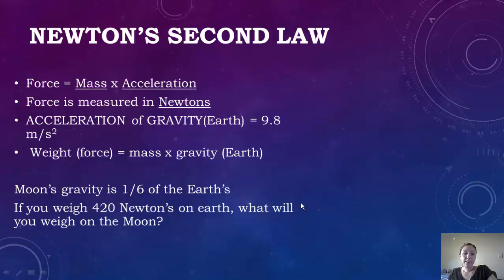So let's look at this quick question. A moon's gravity is one-sixth of the Earth. If you weigh 420 newtons on Earth, what will you weigh on the moon? If you said 70 newtons, you're correct. So basically you would just take 420 and divide it by 6 and that would give you 70 newtons.